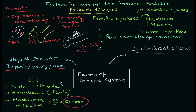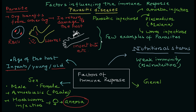The third factor is nutritional status. If you are not taking enough nutrients — important compounds like vitamins and so on — and your body is showing signs of malnutrition, that means you will have weak immunity and be more susceptible to parasitic infections.